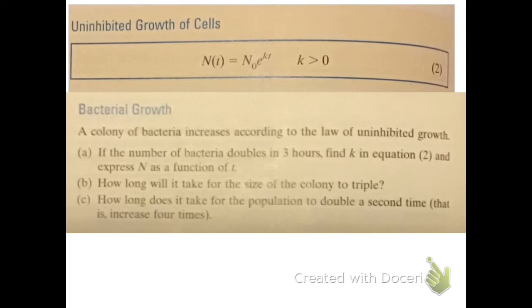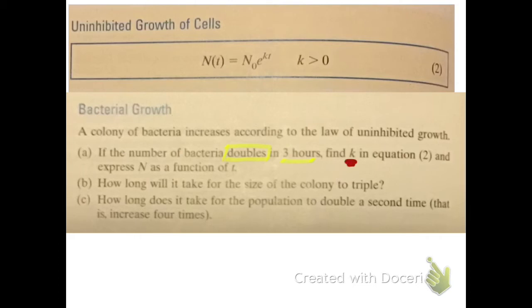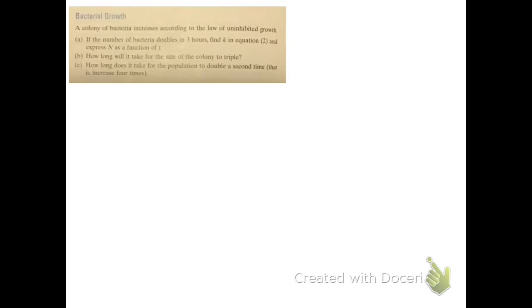The problem states: we have a colony of bacteria that increases over time according to the law of uninhibited growth. Question (a) says: if the number of bacteria doubles in three hours, find k and express N as a function of t. This gives us a lot of information to figure out what k is.